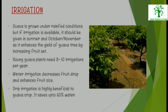Irrigation: Guava is grown under rain-fed conditions, but if irrigation is available, it should be given in summer and October to November, as it enhances yield by increasing fruit set. Young Guava plants need 8–10 irrigations per year. Winter irrigation decreases fruit drop and enhances fruit size. Drip irrigation is highly beneficial to Guava crop and saves up to 60% water.